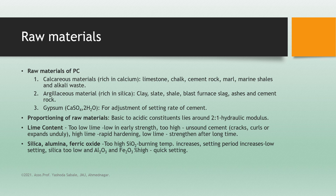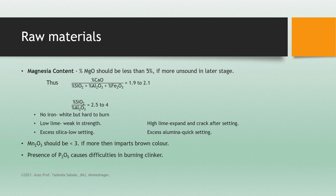Silica, alumina, and ferric oxide: if there is too high silica, burning temperature increases and setting period also increases, giving low-setting cement. If silica is too low and alumina and ferric oxide are high, then the cement is quick setting. The percentage of MgO should be less than 5%; if more, the cement becomes unsound at a later stage. The ratio of lime to acidic oxides (silica + alumina + ferric oxide) must be between 1.9 to 2.1, and the ratio of silica to alumina should be 2.5 to 4.